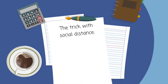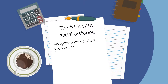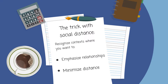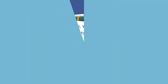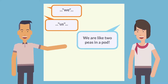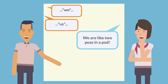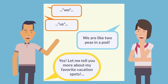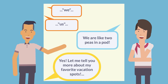The trick with social distance is to recognize contexts and situations in which you would want to emphasize relationships or minimize distance, with strategies like using plural pronouns, informal language and idioms, or making sure you respond to requests for information with details.